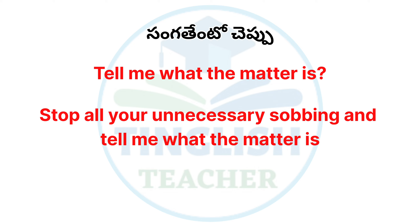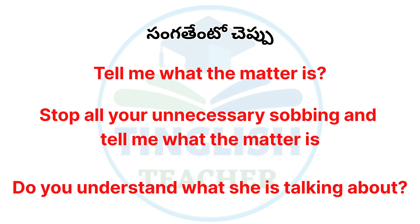Ante, Nuuu ee anavasaramayana eadupanthaa aapii, Aasalu vishayam e nttwo cheppu aani. Sobbing — Ante, Vekki vekki eadavattam aani. Another example: Do you understand what she is talking about? Ante, Aame dhe ni guri nchi maat laadutu tundho, Nekku varuddha maindha aani.